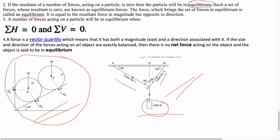Now, the key problem points. In an equilibrium body, you have the horizontal force summation equal to zero, and the vertical force summation equal to zero. Students, this is a very important point: summation H equals zero and summation V equals zero.